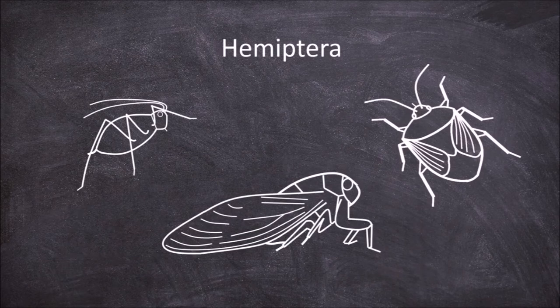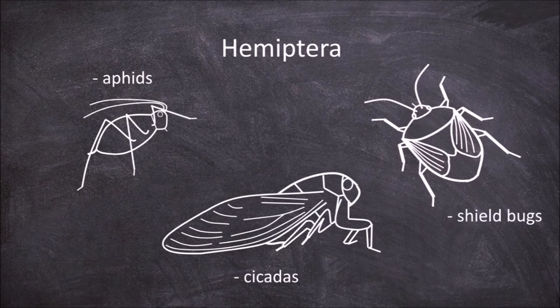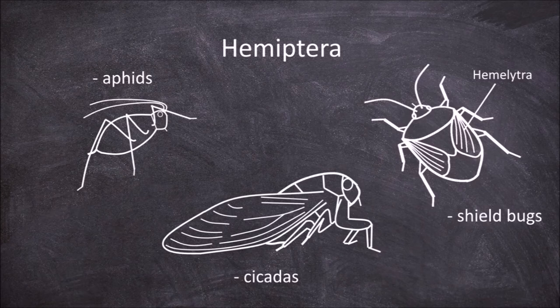The next order is the Hemiptera. This order includes an array of insects including the cicadas, aphids, plant hoppers, leaf hoppers and the shield bugs. Members of this order possess sharp pointed tube-like mouthparts specialized for piercing and sucking. The suborder Heteroptera, also known as the true bugs such as the shield bugs, have wings that are hardened at the base and sit flat over the abdomen. The hoppers such as cicadas and plant hoppers have wings held tent-like over the abdomen. The third suborder, which includes aphids and scale insects, have soft bodies and are often wingless.